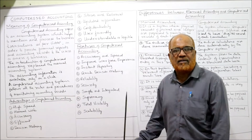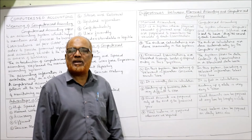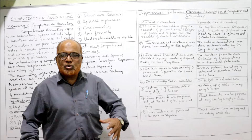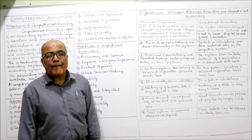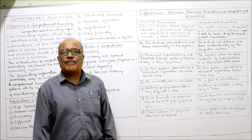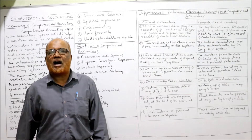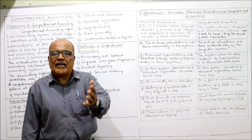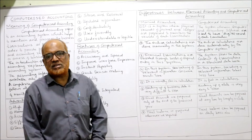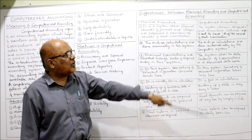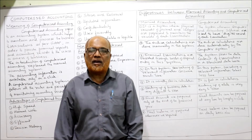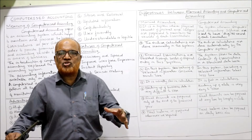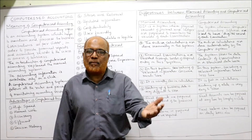Now I want to explain the differences between computerized accounting and manual accounting, as this is frequently asked in examinations. In manual accounting, physical records of journal and ledger are maintained to record all transactions — all business transactions are recorded manually in journal and ledger. In computerized accounting, computer hardware and accounting software are required to maintain all business transactions, which are maintained digitally.